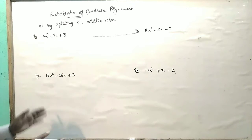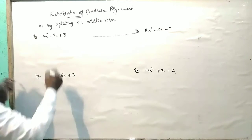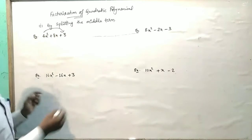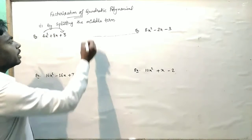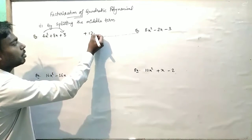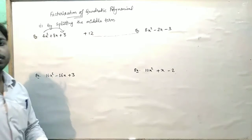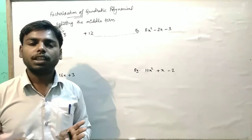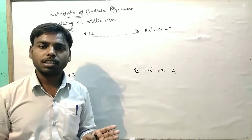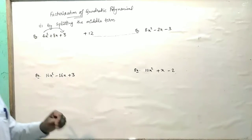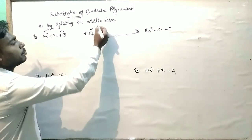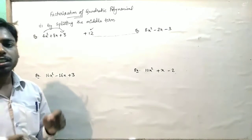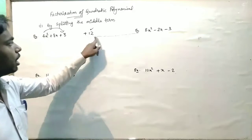First of all, what we have to do? We have to multiply the coefficient of x squared and the constant term. And what we get? We get plus 12. So the first step is to multiply the coefficient of x squared with the constant term, and after multiplication we got positive 12.